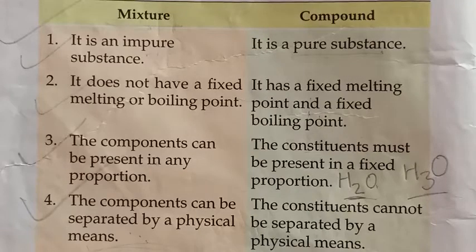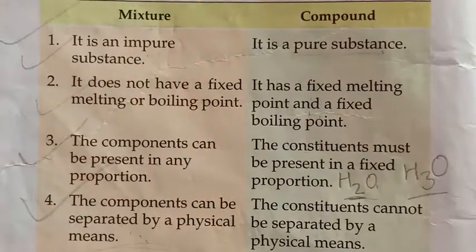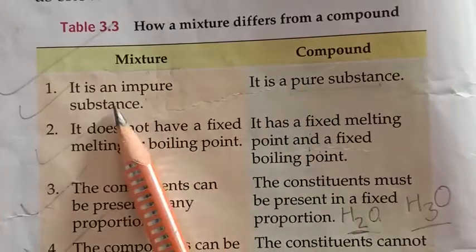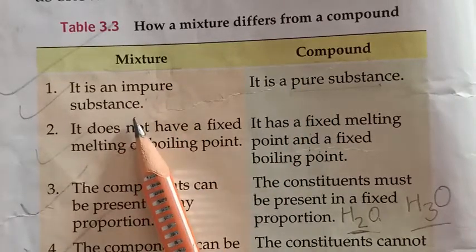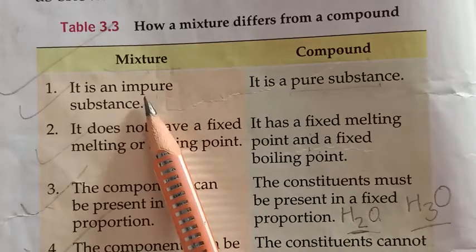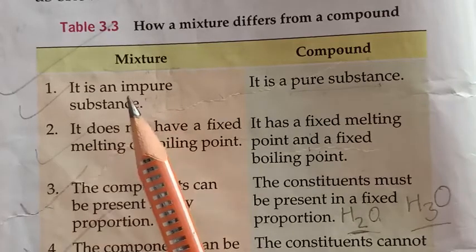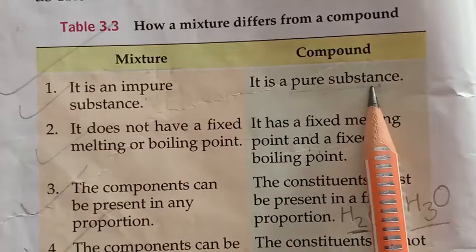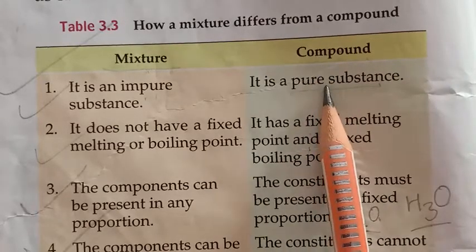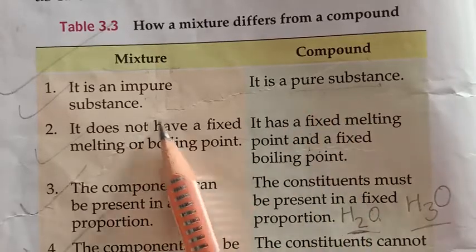Hello students. In this video I am going to start the explanation of the last topic of this chapter — the difference between mixture and compound. The first difference is that a mixture is an impure substance, because the components of a mixture can be present in any proportion. Whereas a compound is a pure substance, because the substances that form the compound have a fixed proportion.